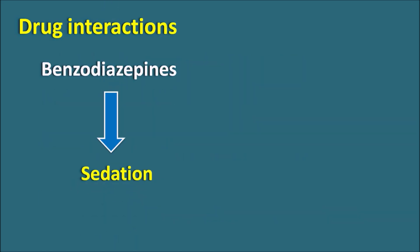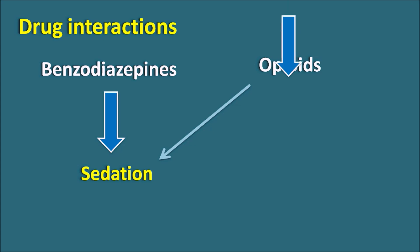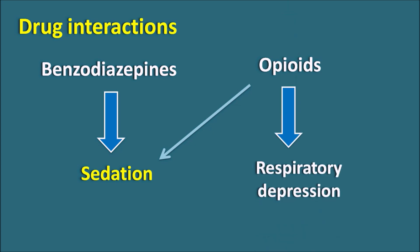Regarding drug interactions: benzodiazepines like Chlordiazepoxide produce sedation, and opioids used as analgesics also produce sedation — so combining them leads to severe sedation. Additionally, opioids produce respiratory depression which is further increased by benzodiazepines. Therefore, Chlordiazepoxide and opioids together can produce severe sedation and respiratory depression, potentially leading to coma and death.